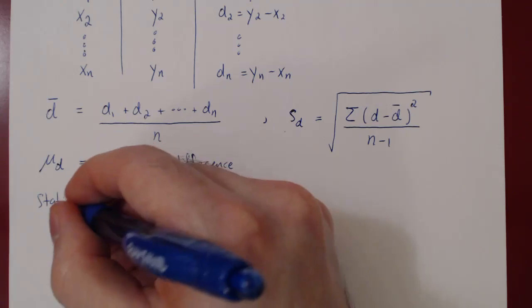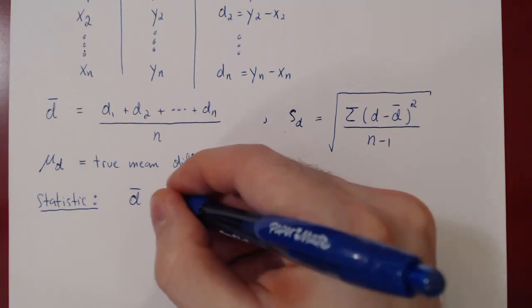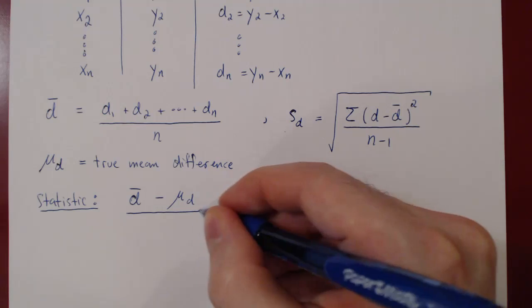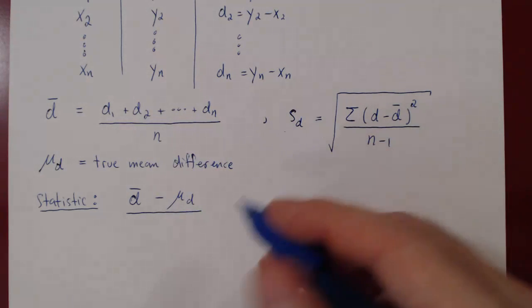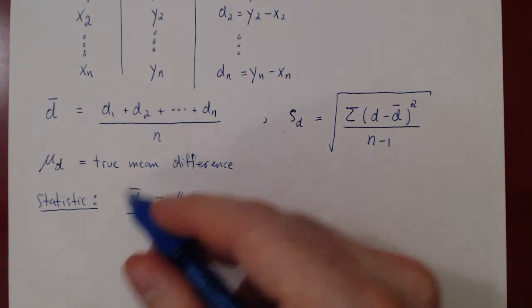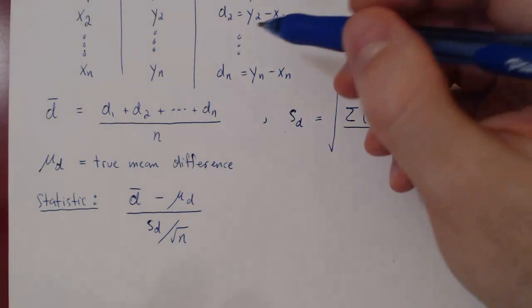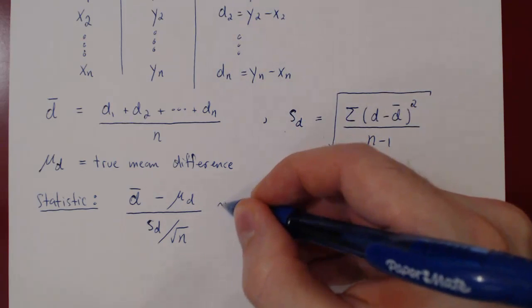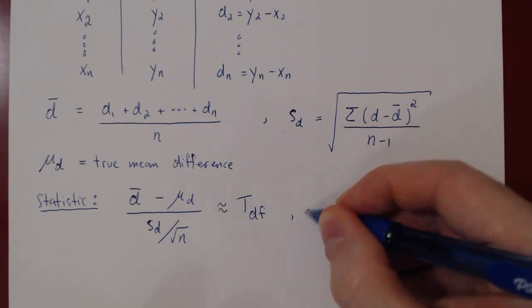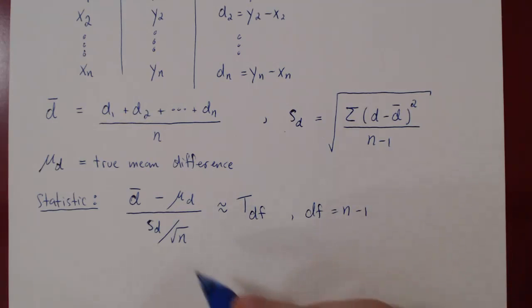And now we can build our statistic for our differences. This will be our test statistic. As always, we take our sample mean, d bar, we subtract our true mean difference, mu d. We divide by the deviation of the average, which is the individual deviation of the sample sd, and if you remember, over the root of the sample size. And under the central limit theorem, if we have more than 30 values in our sample of differences, or if we already know that we have a normal distribution, we will get approximately a t random variable, and the degrees of freedom are simply n minus 1.